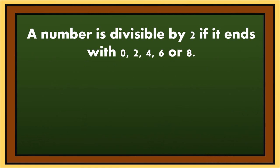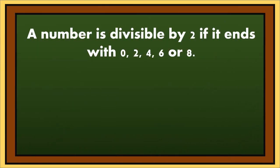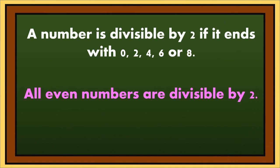Let's have another example. 108 ends with 8. If a number ends with 8, it is divisible by 2. Let's divide 108 by 2. The answer is 54. We can simply say that all even numbers are divisible by 2.